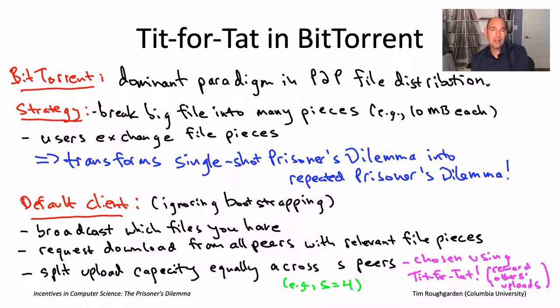Just to be clear, tit-for-tat is not being used merely as a metaphor. If you look at what the creator of BitTorrent — computer scientist Bram Cohen, who also wrote the default client — says in his research paper about the creation of BitTorrent, he literally says he was inspired by the prisoner's dilemma and the tit-for-tat strategy. So this game theory from the mid-20th century really did directly inform this impactful peer-to-peer file distribution system. Very cool.